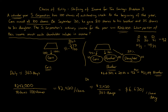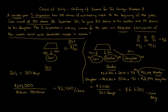For daughter's calculation, we do the same: $6.6301 times 35 shares times 92 days. That gives daughter $21,349 rounded to the nearest dollar. Those are the final numbers for brother and daughter.